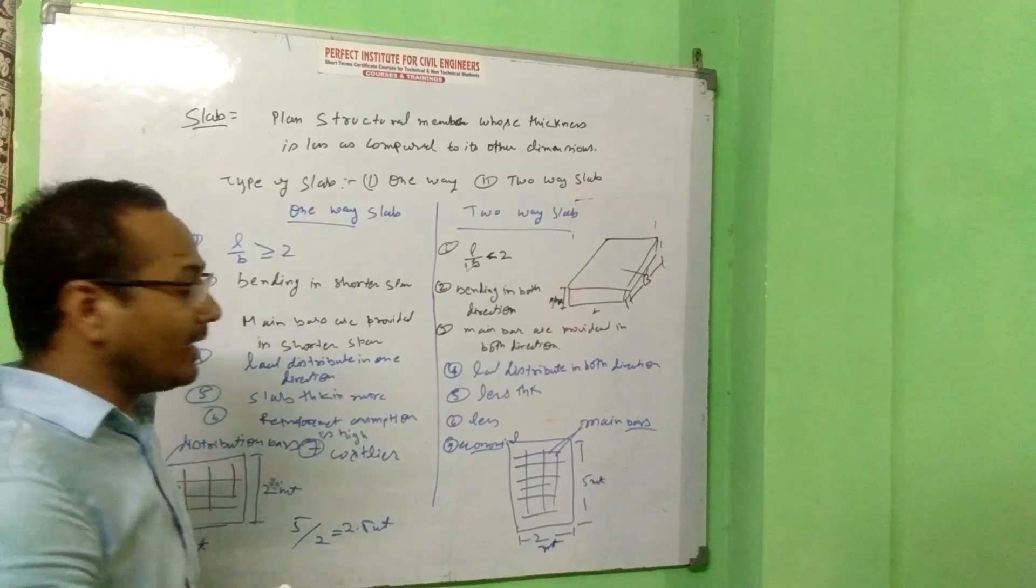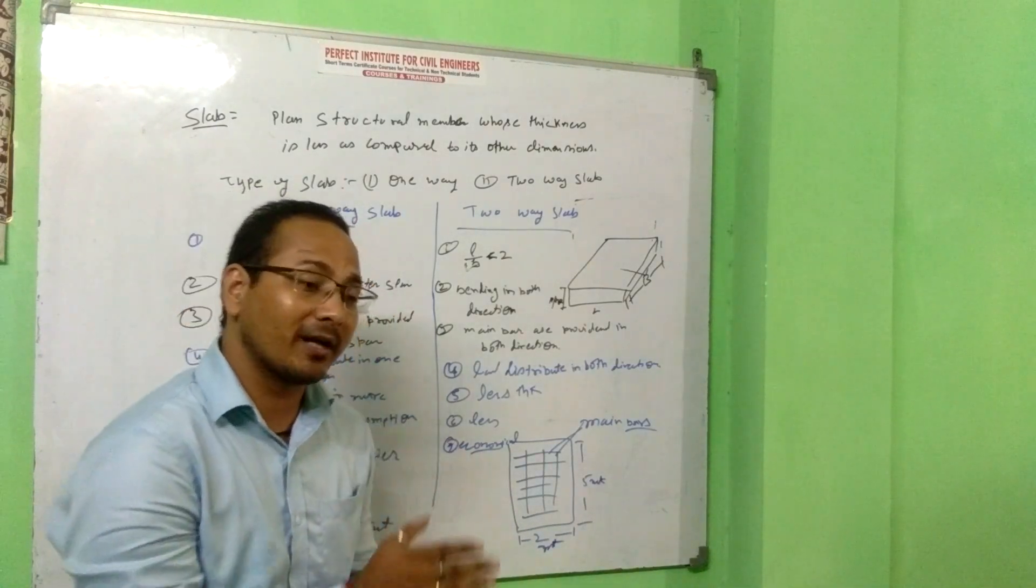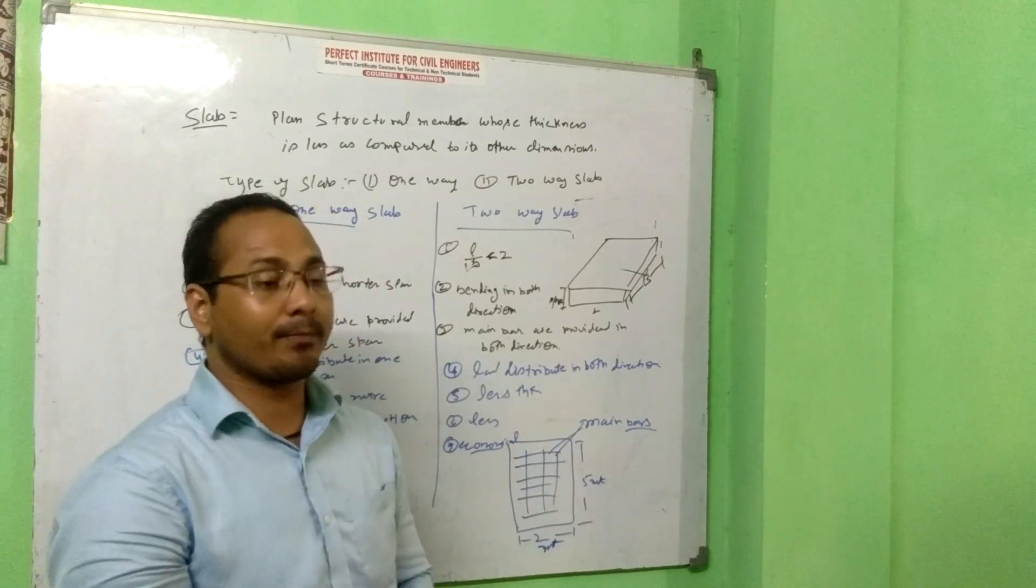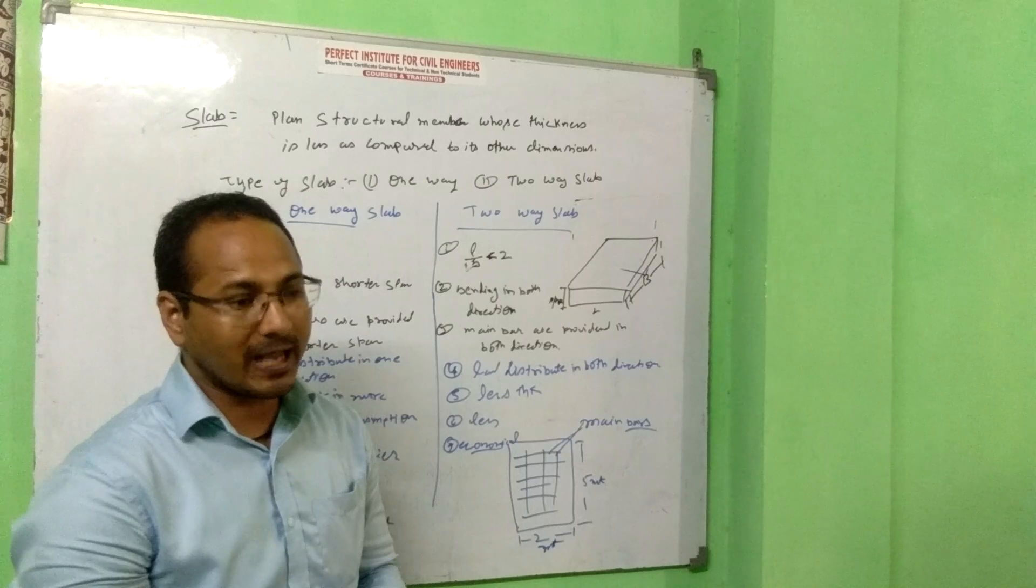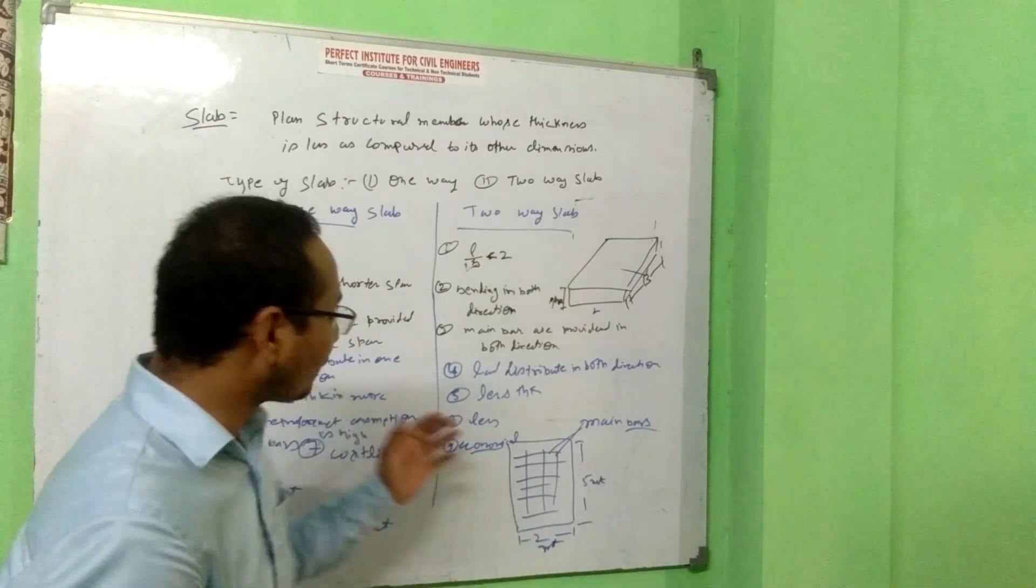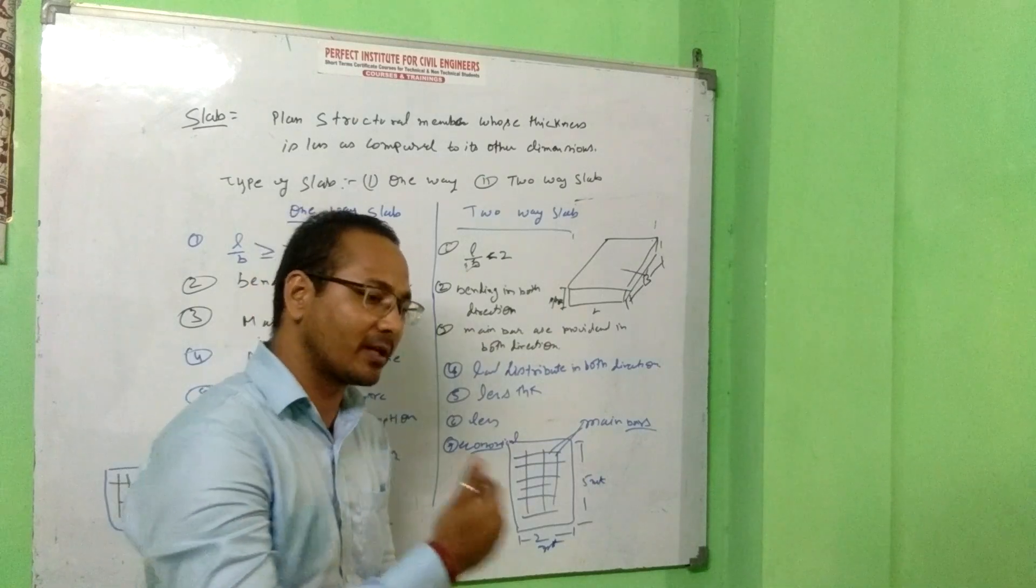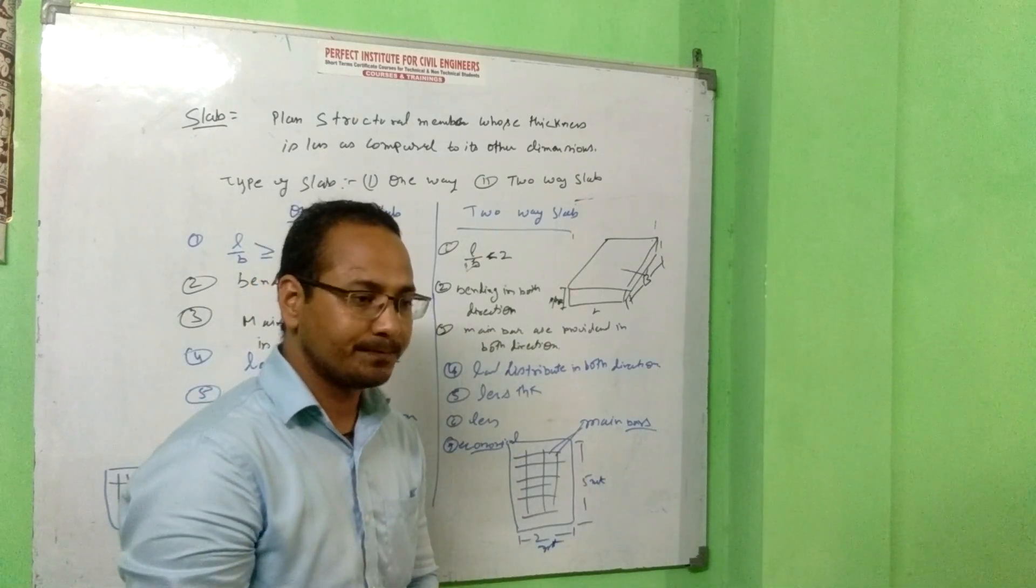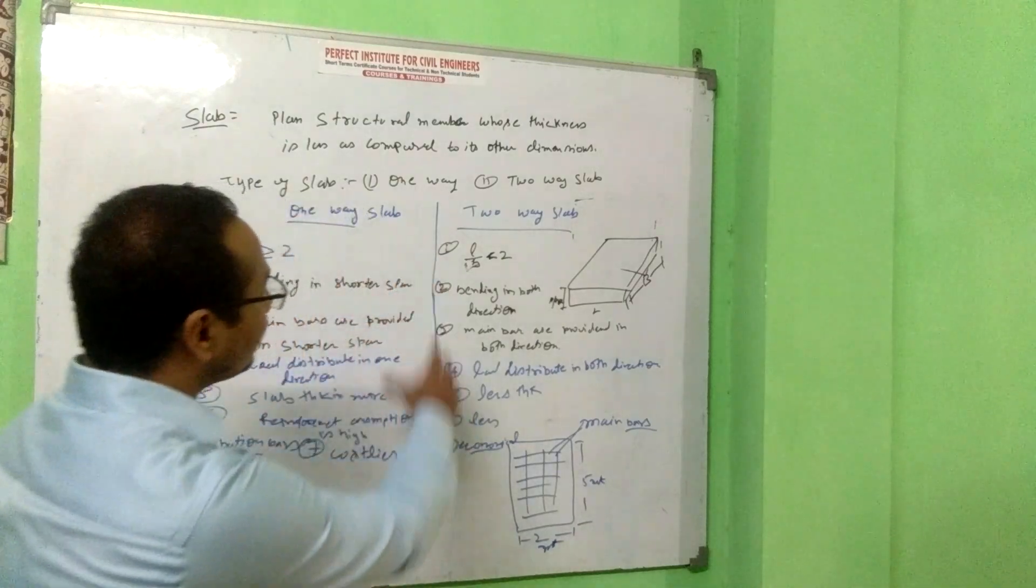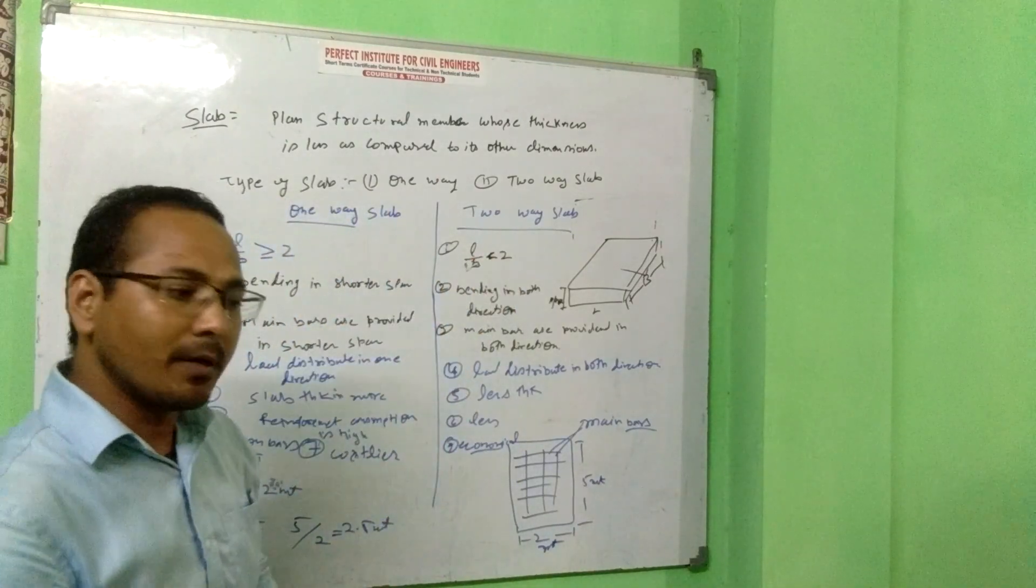We say that the rectangular structure or plot, the cost is more as compared to square plot. People always prefer to use square plot as compared to rectangular plot, because the construction cost is more. Materials are more than the square plot. This is the difference between one-way slab and two-way slab. Do you understand? Please note down.